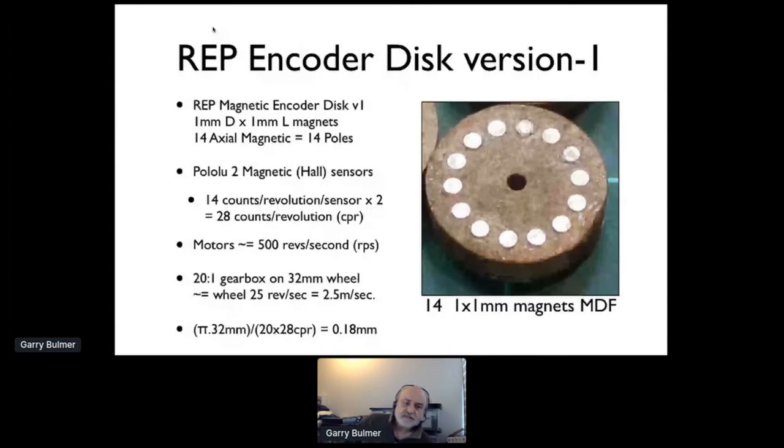If that motor was doing 500 revs, 20 to 1 gearbox on a 32 millimeter wheel, we'll be doing 2.5 meters per second, and the resolution of that motion is now better than 0.2 of a millimeter. That was our first stab and we did quite a lot of different dimensional changes on that in different materials. I think we tried about five or six materials.